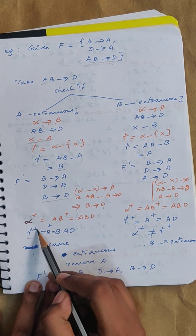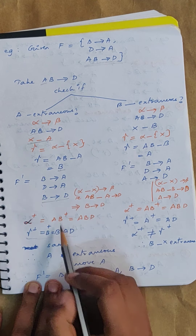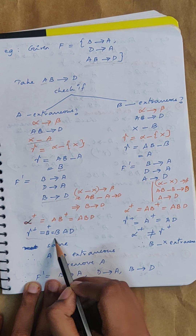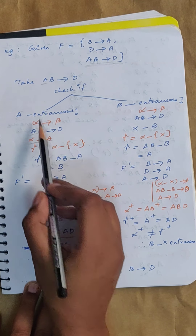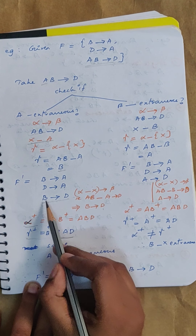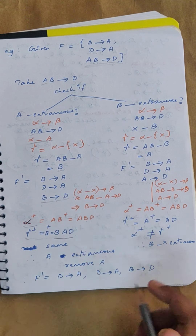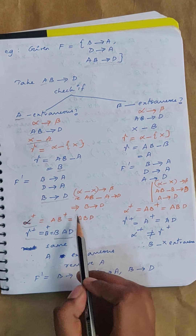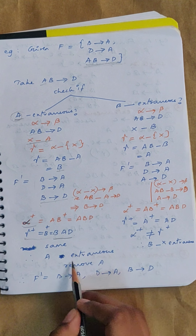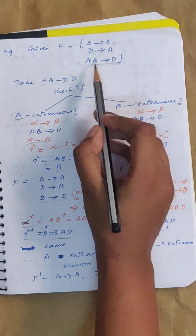Find B closure in F dash. You get B, then from B→A you get A, then from B→D you get D. So gamma closure is {B, A, D}. Now find alpha closure: AB closure in F dash gives AB, and since B→D, you get D — so AB closure is {A, B, D}. Alpha closure and gamma closure are the same, so A is extraneous. A is removed from that functional dependency, so the set of functional dependencies becomes B→A, D→A, and B→D.